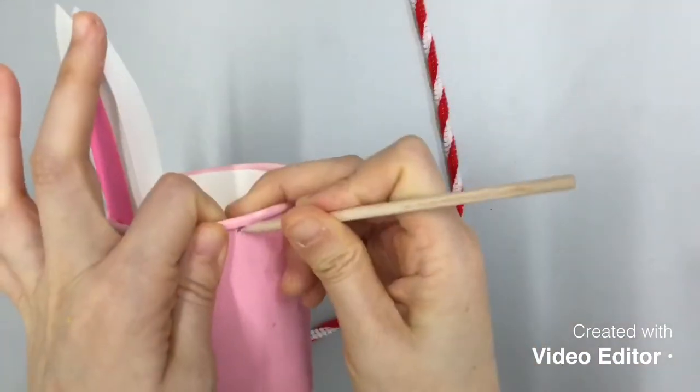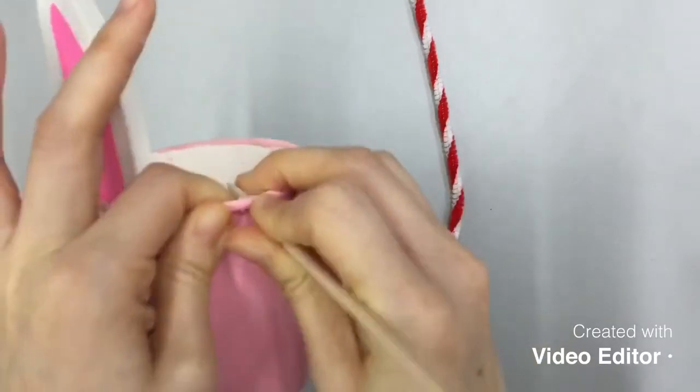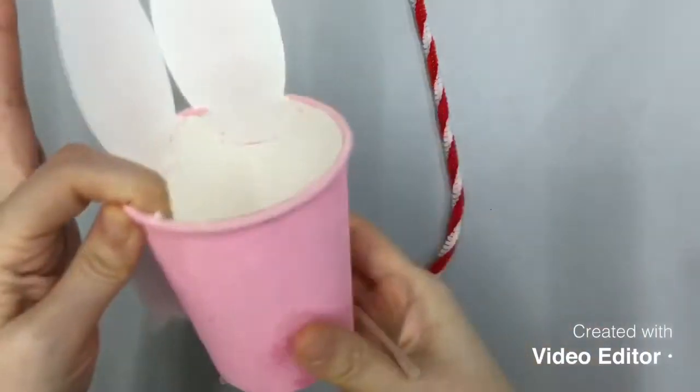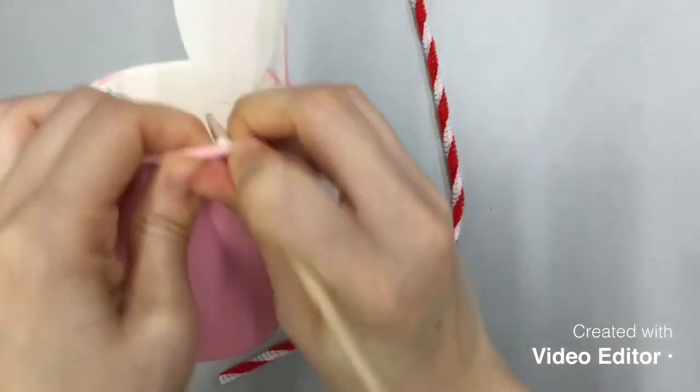So with a sharp object, I punch a little hole according to where I marked before. And I do it on the other side too. Sorry, bunny!